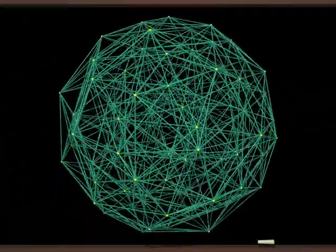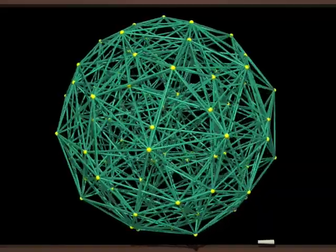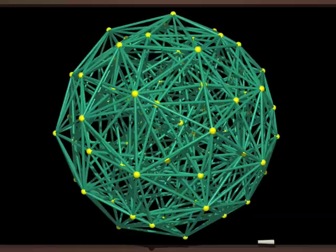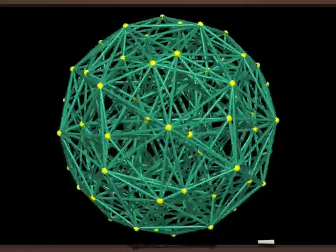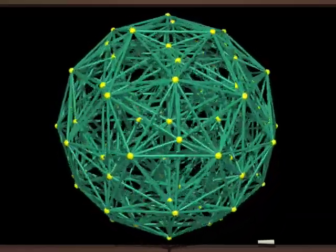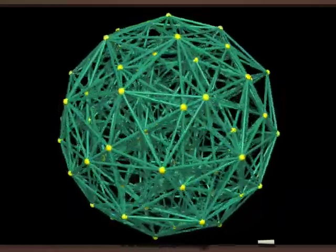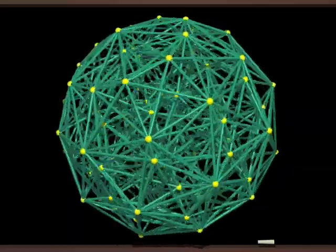The champion is the 600 cell, like a gigantic macromolecule with its 720 edges and 120 vertices, and 12 edges starting from each vertex.